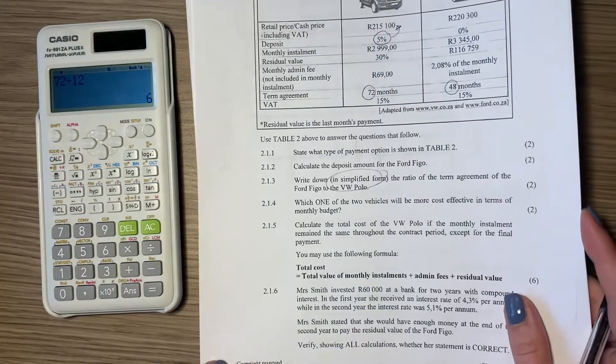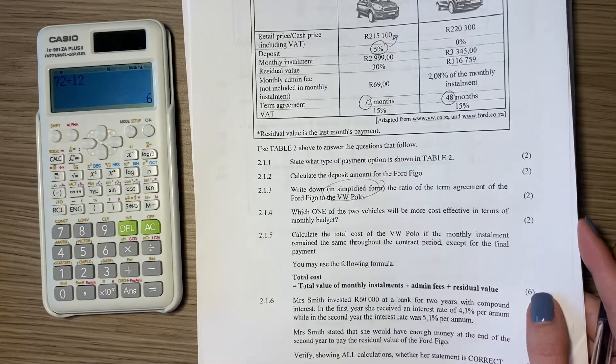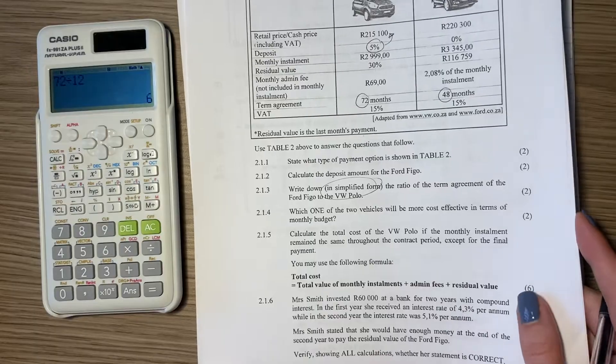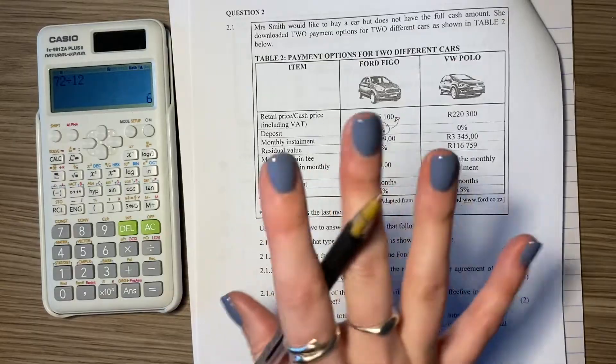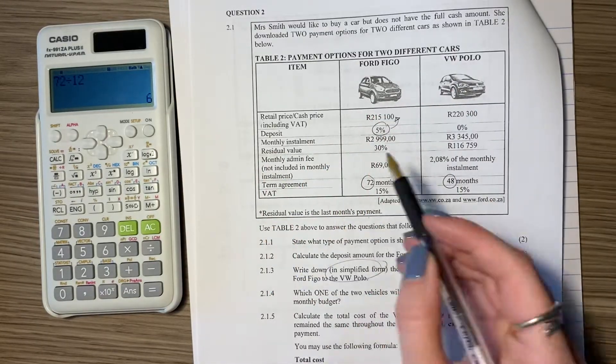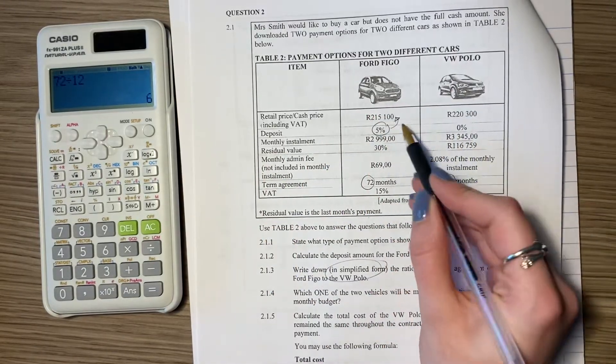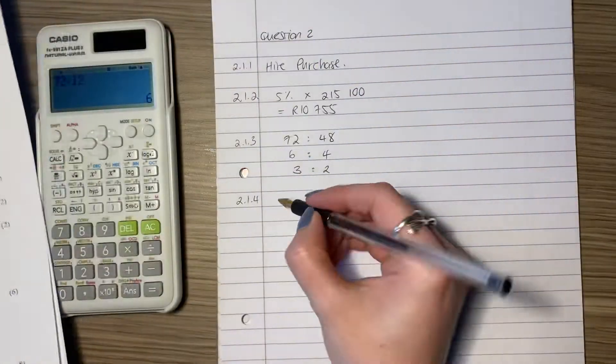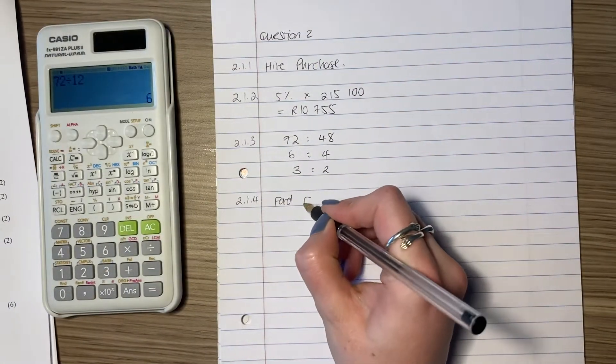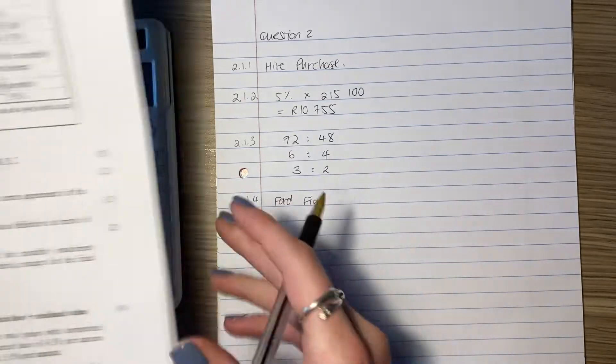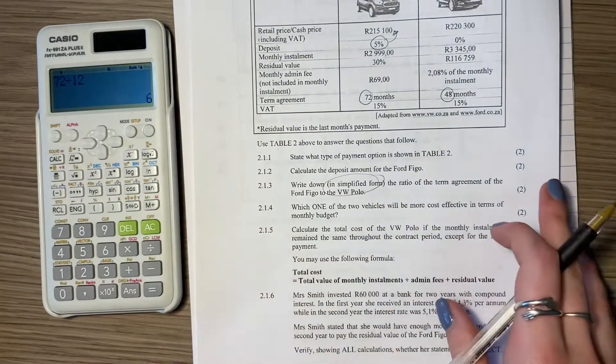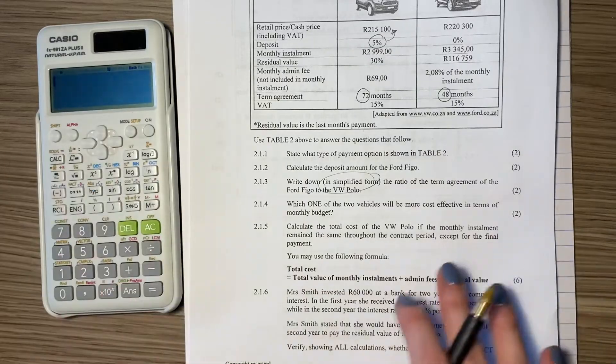Let's continue now to 2.1.4. It says, which one of the two vehicles will be more cost effective in terms of monthly budget? So now when students read this question, they want to go do like a whole exercise saying this is more expensive than this. Don't stress yourself. It just said monthly installment. So which one is more cost effective? It's my boy Ford Figo. So you just write Ford Figo. Don't stress yourself out. Remember these questions in the beginning, they're a little bit easier because they're easing you into the paper.